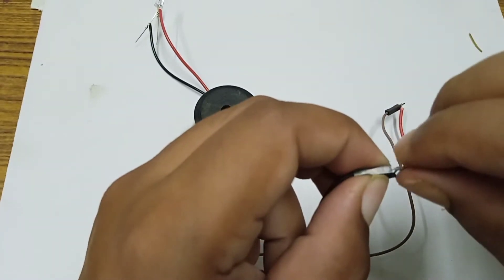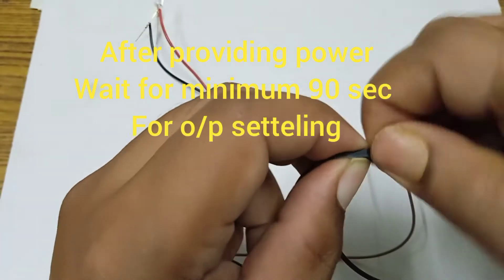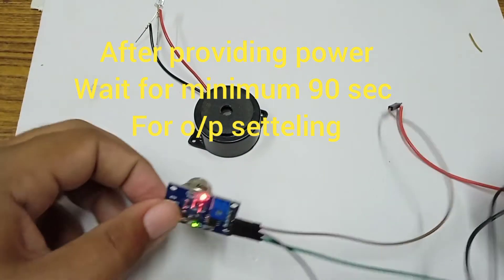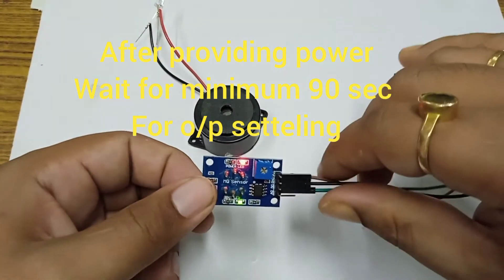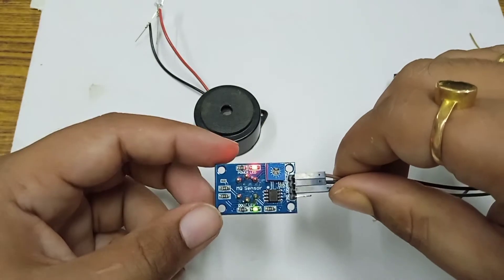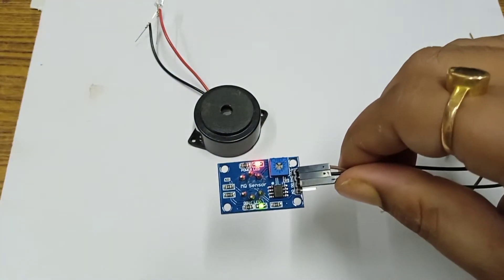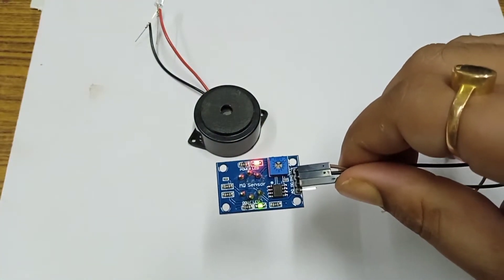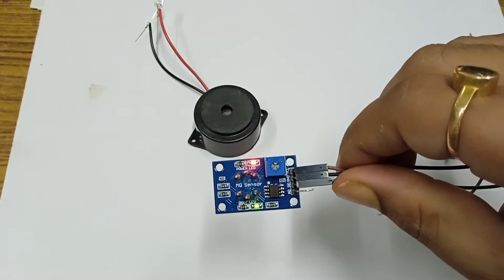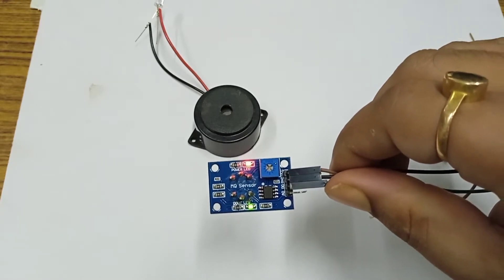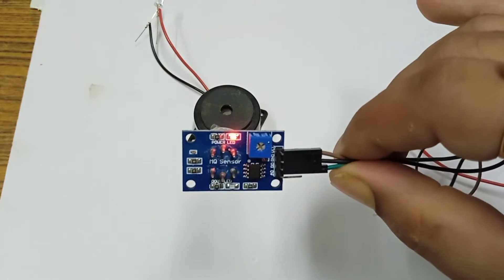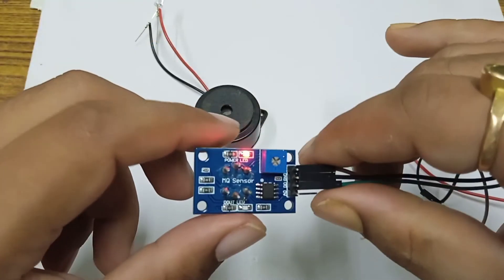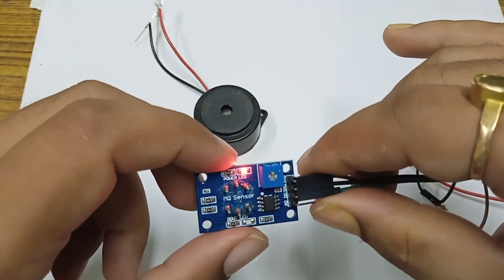And remember, after giving this power supply, we have to keep this sensor on for minimum 60 to 90 seconds because by this time the preheating takes place. So after 60 to 90 seconds only we will start the next task. As you can see, whenever I have given the supply, the power LED is already glowing.